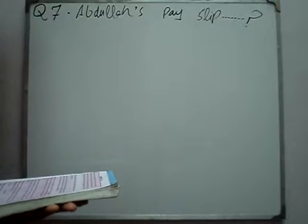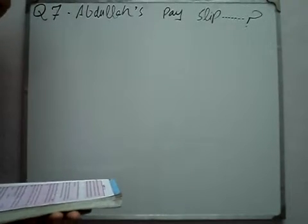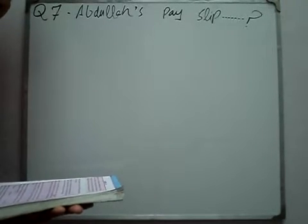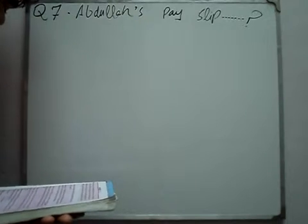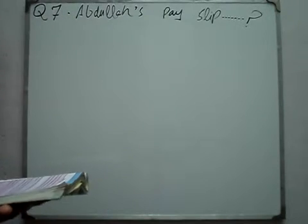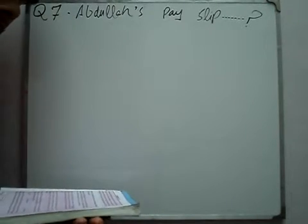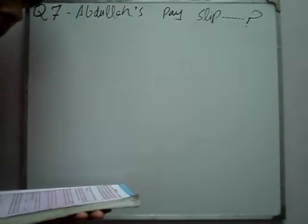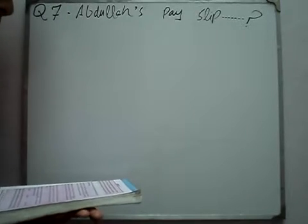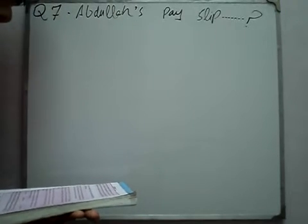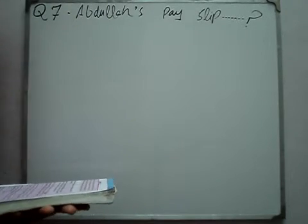Abdullah's payslip shows that he had worked 6 hours overtime in addition to his basic 36 hours week. His basic rate of pay is Rs 60 and overtime is paid at time and a half.